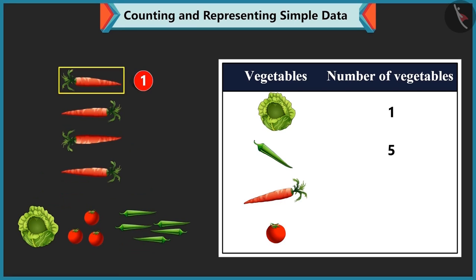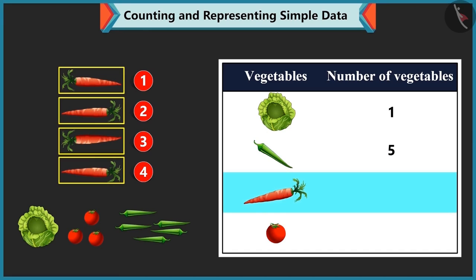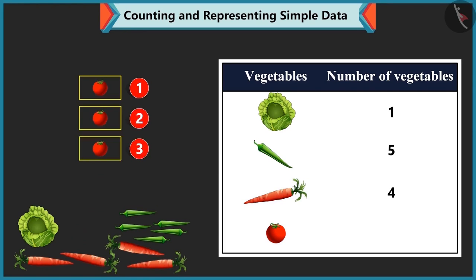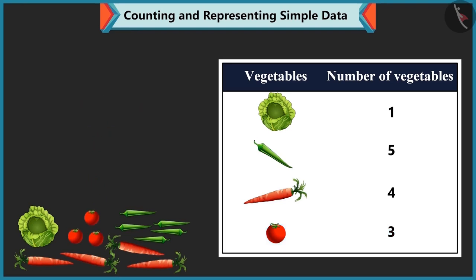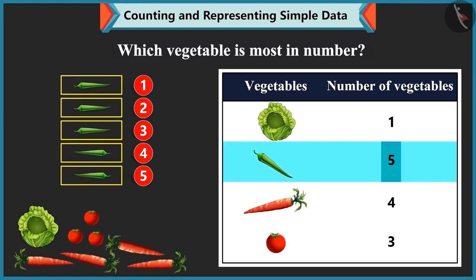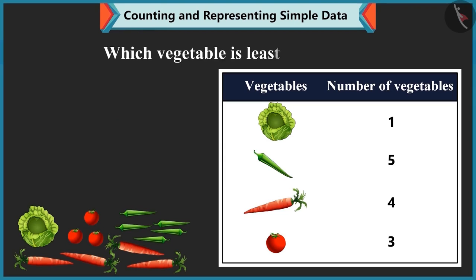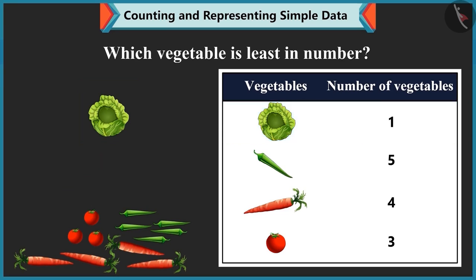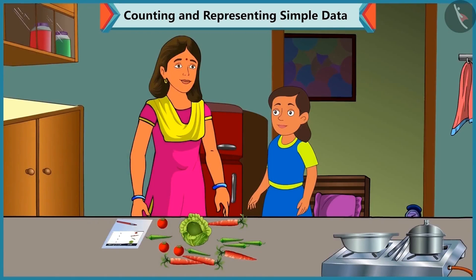Bubbly counts: carrots are 1, 2, 3 and 4, so we write 4 against carrot. Tomatoes are 1, 2 and 3, so we write 3 against tomato. Mummy asks which vegetable is most in number. Bubbly answers: there are 5 chillies, so it is most. Mummy asks which is least. Bubbly answers: there is 1 cabbage, so it is least. Mummy says well done.